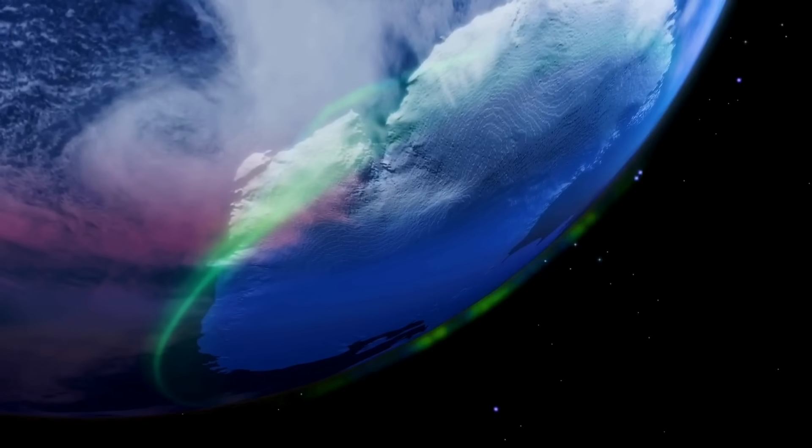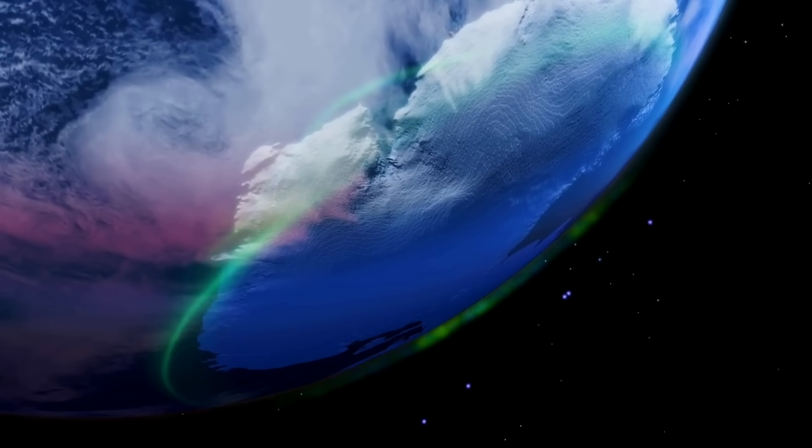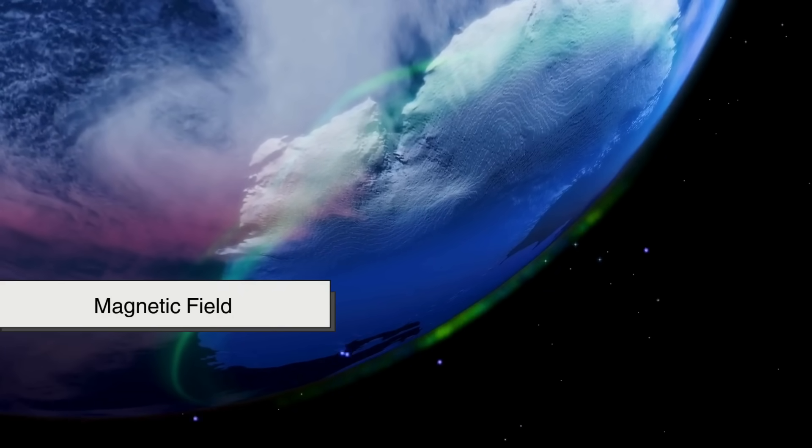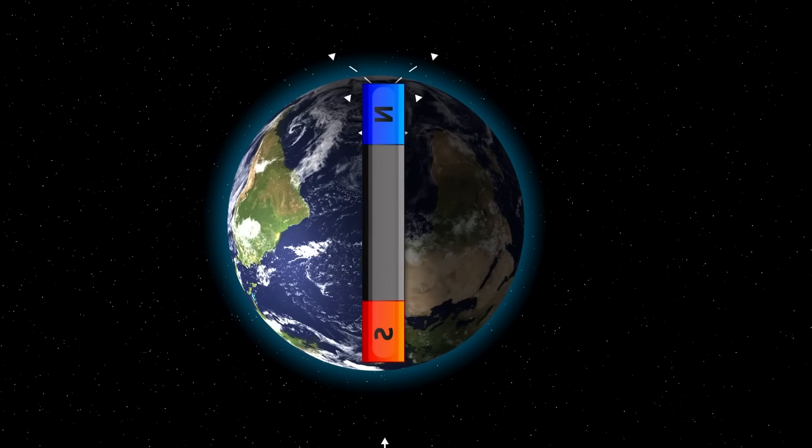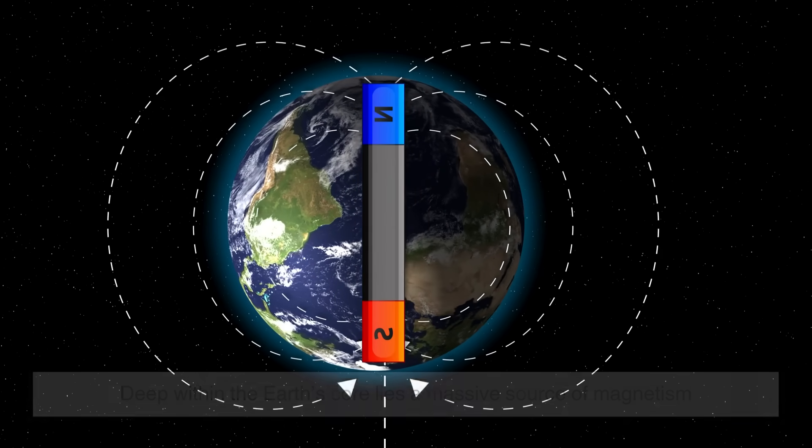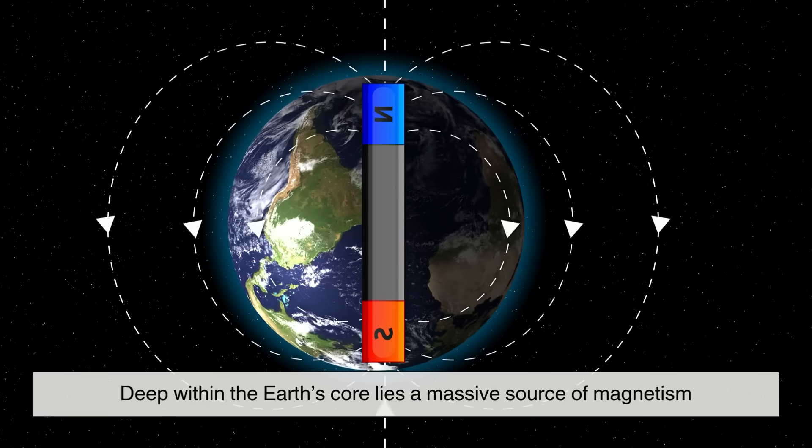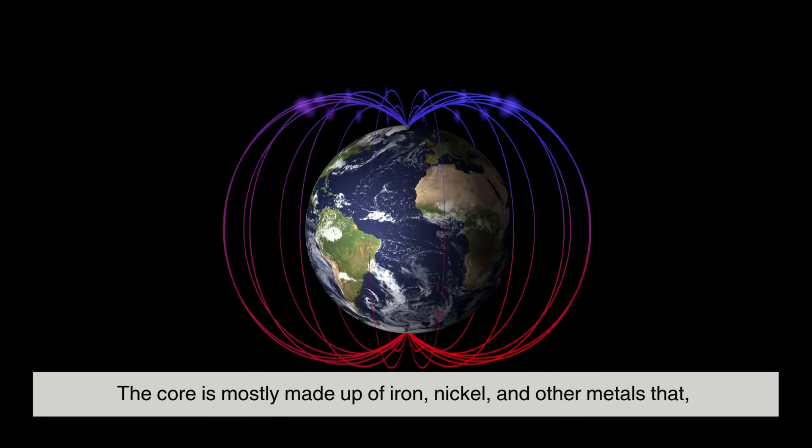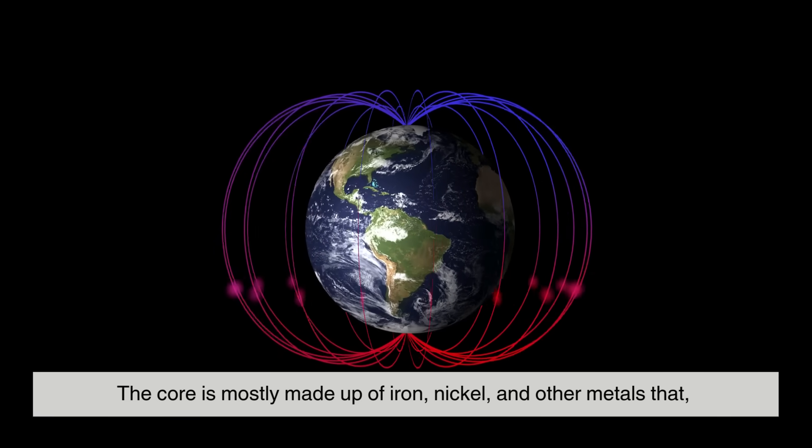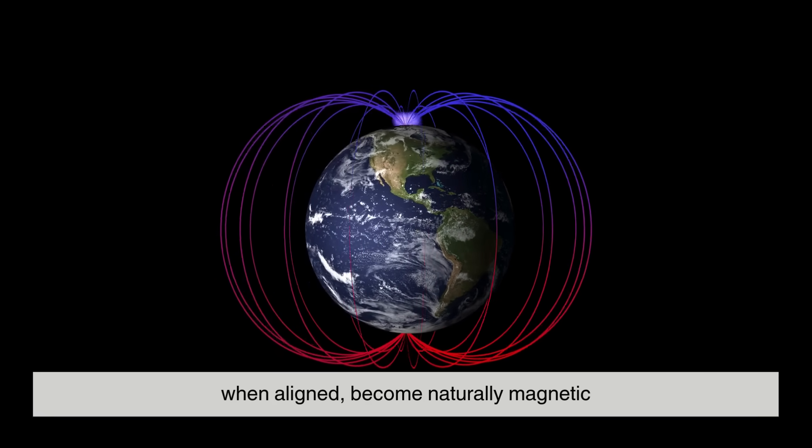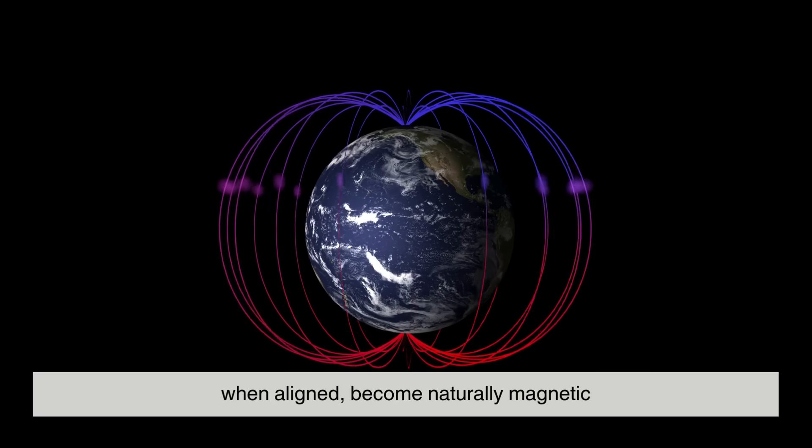Let's begin with the Earth itself. Imagine you're standing on the surface of the planet. Surrounding the Earth is an invisible magnetic field. This is why compasses always point north. Deep within the Earth's core lies a massive source of magnetism. The core is mostly made up of iron, nickel, and other metals that, when aligned, become naturally magnetic.